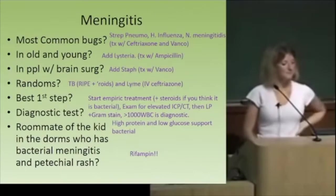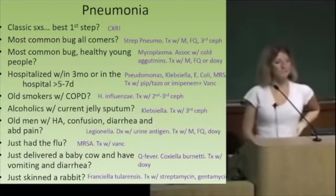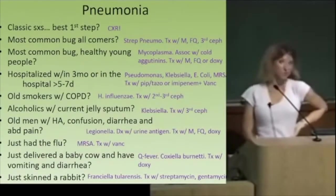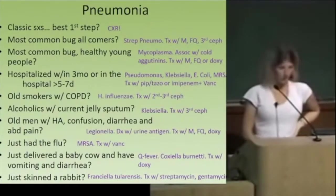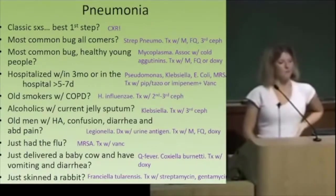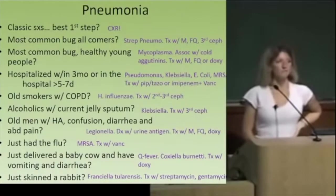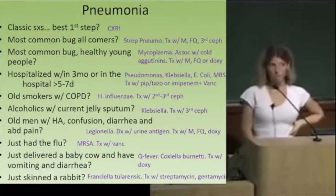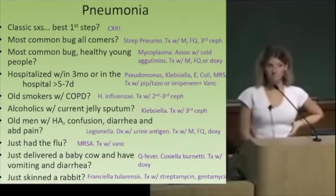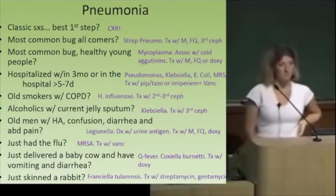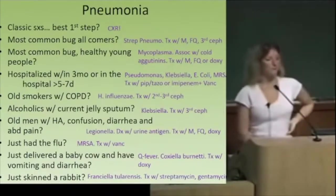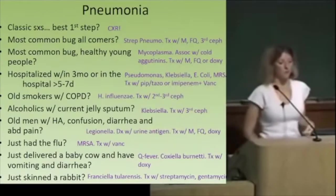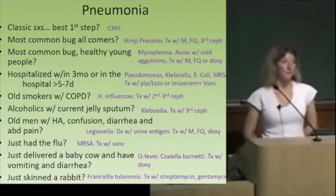For pneumonia, the most common bug in healthy young people is strep pneumo. For atypicals, mycoplasma is the most common, associated with cold agglutinins, and we treat it differently — a macrolide is first line.